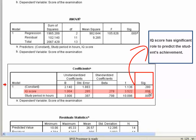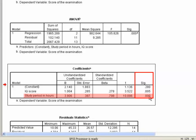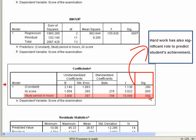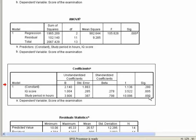And the SIG value of constant a2 in study period, 0.000, is less than 0.05, which means the hard work has also significant role to predict the student's achievement.